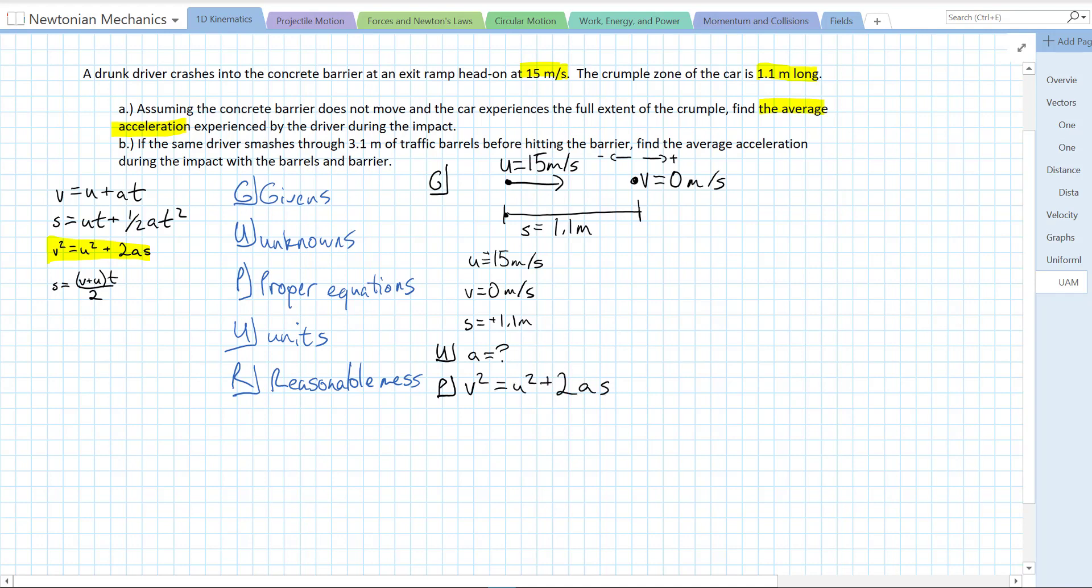V squared equals U squared plus 2AS. Now that's the equation. We need to solve it for our unknown variable A. So I subtract U squared from both sides. I get V squared minus U squared equals 2AS. And to solve for A, I need to divide both sides by 2S. So if I divide both sides by 2S, I'm left with my final proper equation: A is equal to V squared minus U squared over 2S.